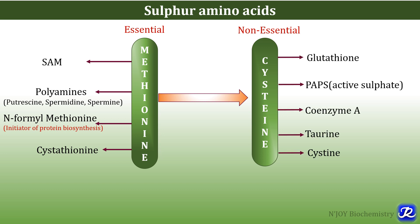Cysteine is involved in the formation of biologically important peptide glutathione, PAPS (the active form of sulfate), coenzyme A, and taurine — all synthesized from cysteine. Cysteine is stored in the form of cystine: two cysteine molecules linked together by a disulfide bond. In proteins, cysteine occurs in the form of cystine. Both methionine and cysteine are glucogenic amino acids.